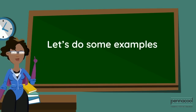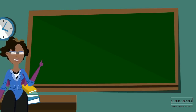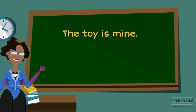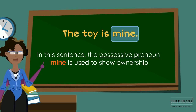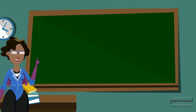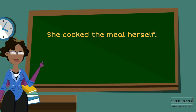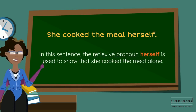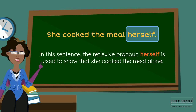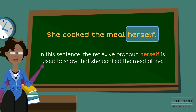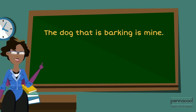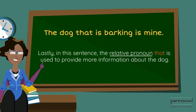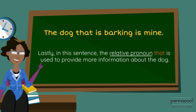Let's do some examples. The toy is mine — in this sentence, the possessive pronoun mine is used to show ownership. She cooked the meal herself — in this sentence, the reflexive pronoun herself is used to show that she cooked the meal alone. The dog that is barking is mine — in this sentence, the relative pronoun that is used to provide more information about the dog.